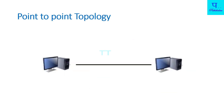First, we will see Point-to-Point Topology. This is a diagram — or you can say a geometrical representation — of Point-to-Point Topology. In this topology, there are two devices connected to a single cable, and they have one-to-one communication. You can say it is one-to-one communication between the two devices.